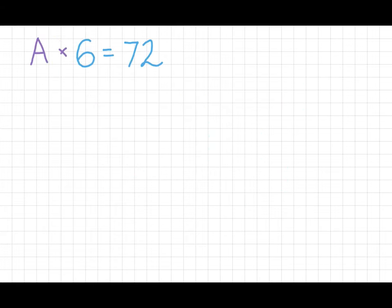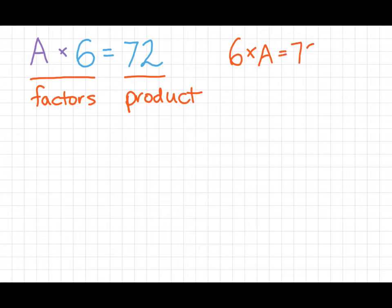When you have a missing number, it's important to know what you're missing. In this case, these numbers are our factors, and this number here is the product. Now, remember, you can interchange your factors, but that doesn't really help us, right? So we could interchange this and write 6 times A equals 72. That doesn't really help us. But in a fact family, we also have two division problems.